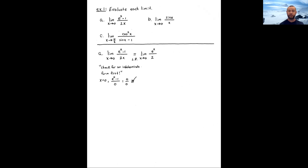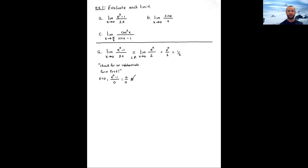Applying L'Hôpital's Rule — I'll put 'LR' under the equals sign to indicate this — we differentiate numerator and denominator individually. The derivative of e^x − 1 is e^x, and the derivative of 2x is 2. Do not apply the quotient rule here. We get the limit of e^x / 2. This is no longer indeterminate: plugging in x = 0 gives 1/2.